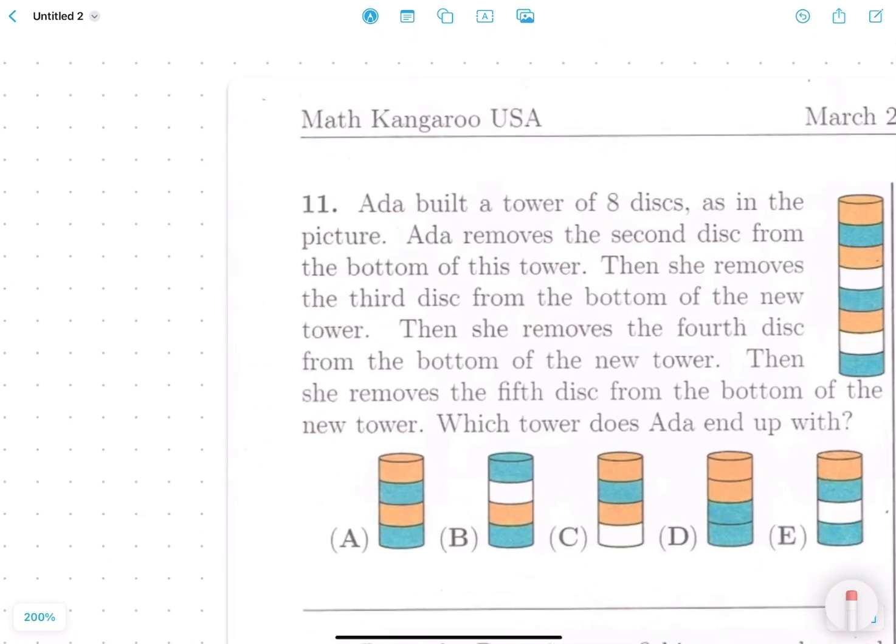Ada built a tower of 8 disks, as in the picture. Ada removes the second disk from the bottom of this tower. Then she removes the third disk from the bottom of the new tower. Then she removes the fourth disk from the bottom of the new tower. Then she removes the fifth disk from the bottom of the new tower. Which tower does Ada end up with?